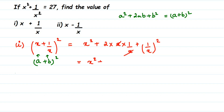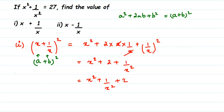Now, (1/x)² is 1/x² — as learned in the exponent chapter, the power goes to both numerator and denominator. So we have x² + 1/x² + 2. Rearranging, because in the given question x² + 1/x² = 27, we substitute that value: 27 + 2 = 29.